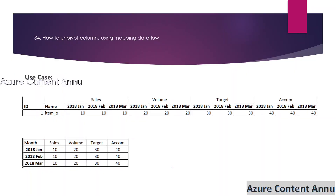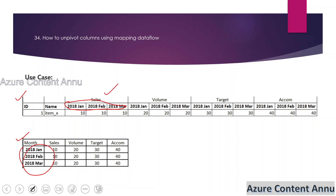Our requirement is to convert this input dataset into this kind of output dataset. Basically, if you closely observe, we have to convert the column names into row values — that is called unpivoting. So we have to perform unpivoting on top of multiple columns which are coming from different datasets.